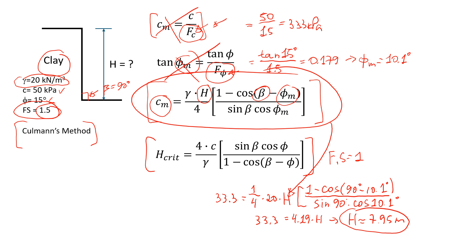In this case we can write that the critical value of cut is four times cohesion, which is 50, divided by unit weight of 20. Here we have sine of 90 degrees times cosine of 15 degrees, divided by one minus cosine of 90 minus 15.